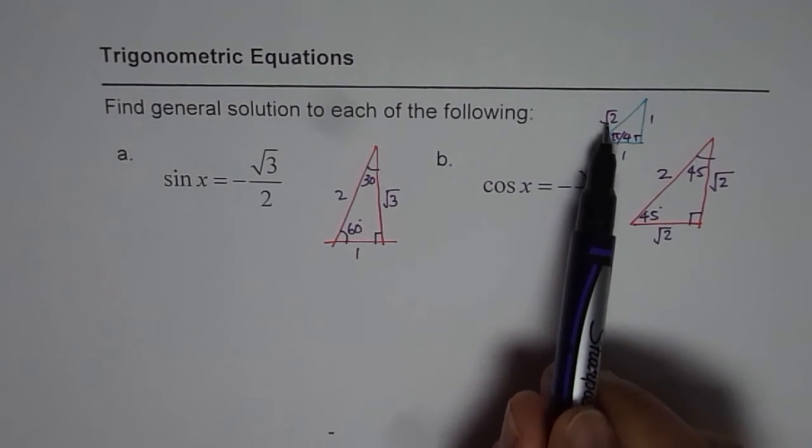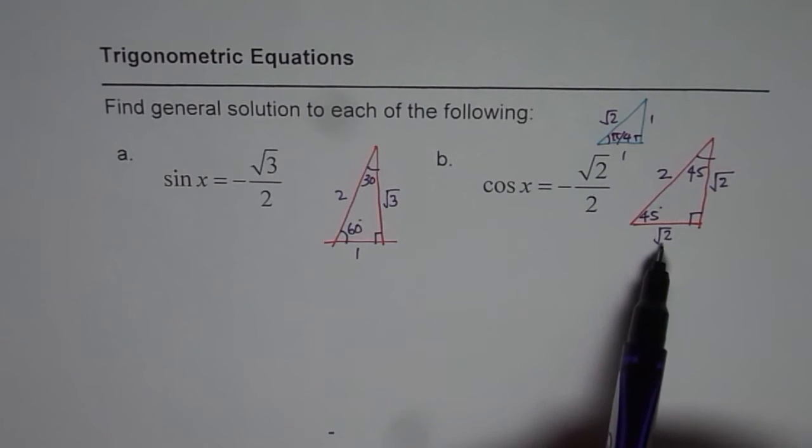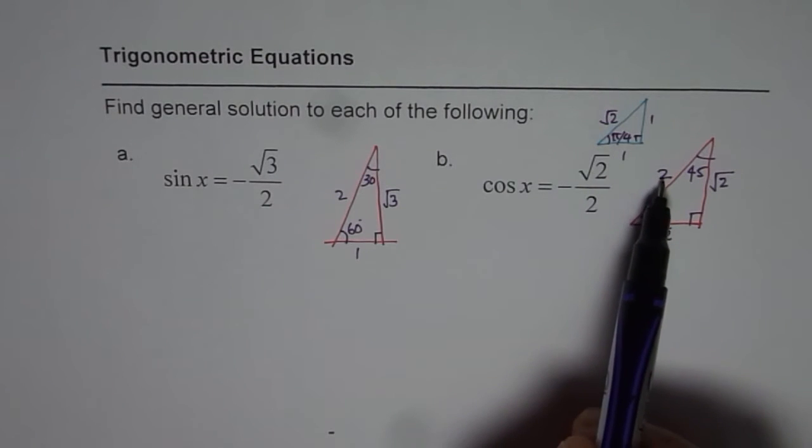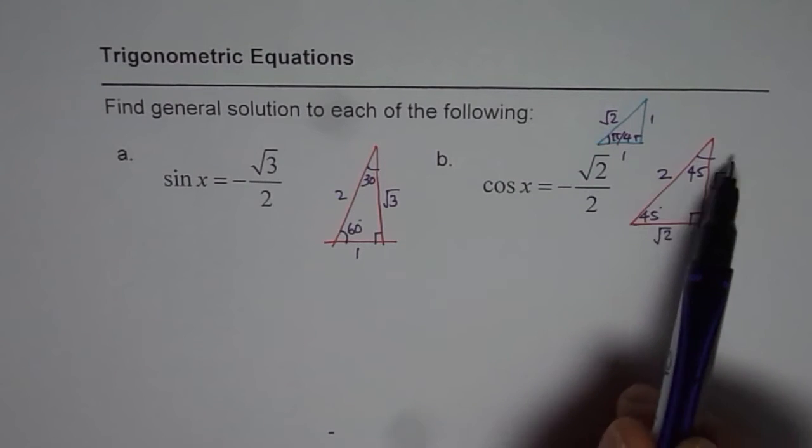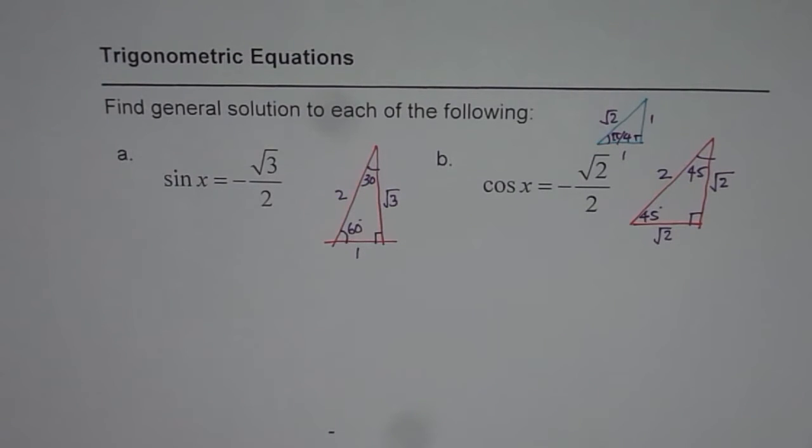At times we also use the same triangle where we say that the sides are 1, 1, square root 2. So both are equivalent triangles. The only thing is that I have multiplied each side by square root 2.